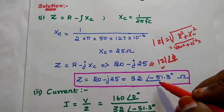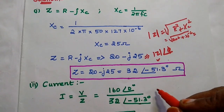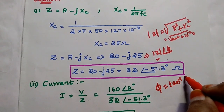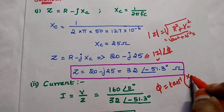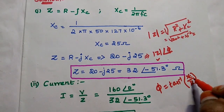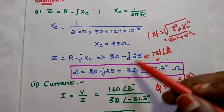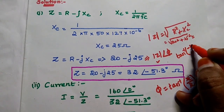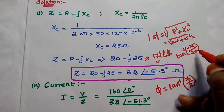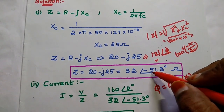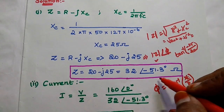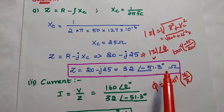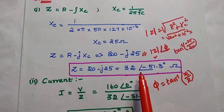For the phase, we use the formula: φ equals tan inverse of the imaginary value divided by the real value, that is XC divided by R. Since XC is minus 25, φ equals tan inverse of minus 25 divided by 20, giving minus 51.3 degrees. So the magnitude is 32 and the phase is minus 51.3 degrees — this is the polar form of the impedance.